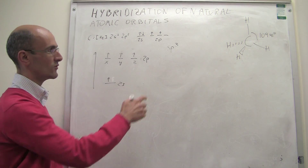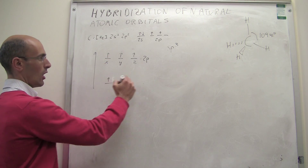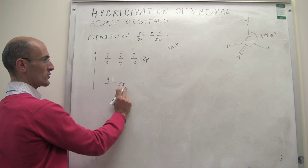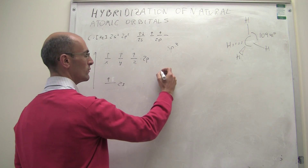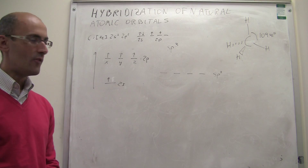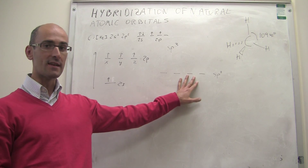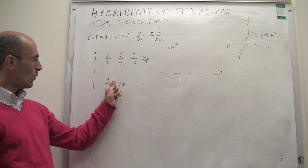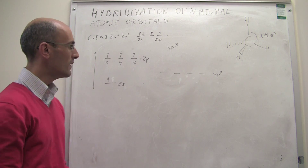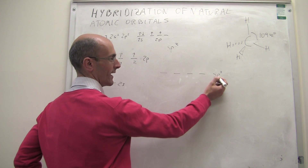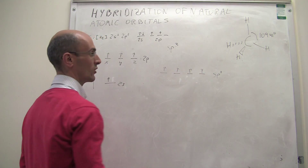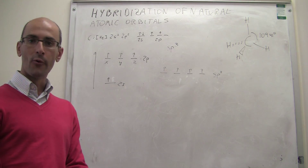Instead, what we're going to do to justify that those four bonds are identical is to mix all of these atomic orbitals to form new hybrid orbitals. We mix the 2s orbital with the 2px, 2py, and 2pz to form hybrid atomic orbitals, which we call sp3. The number of hybrid orbitals you get is exactly the same as the number of natural orbitals you mix — here we mix four natural orbitals and get four hybrid orbitals. They're called sp3 because you're hybridizing one s orbital with three 2p orbitals. The electronic configuration now gives you four identical orbitals and four identical bonds.